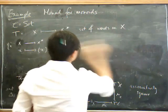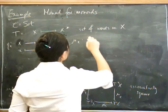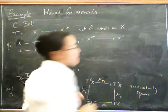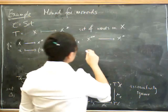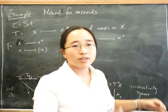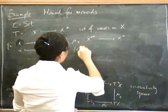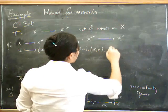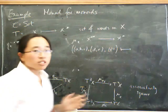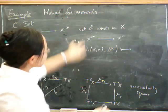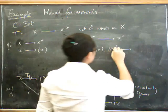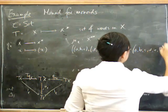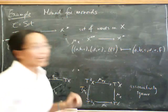And then we have to define the natural transformation mu. Mu of x goes from T squared of x, which is x star star, and it's a function to x star. So what's x star star? Well, it's words in words in x, so it's a list of lists. So here's a list of lists: A, B, C, D, E, F. So how can we possibly turn that into just one list? Well, you just delete these brackets. So this is just the case of deleting the inside brackets, and you get one long list: A, B, C, D, E, F. So that's what the multiplication is.